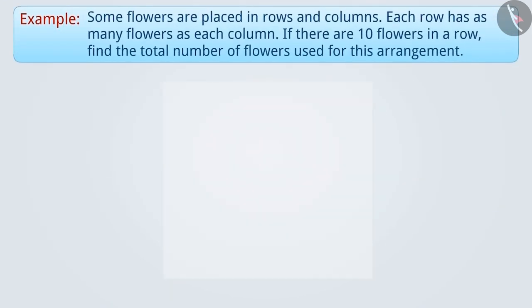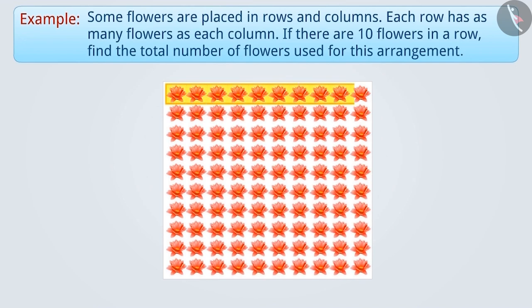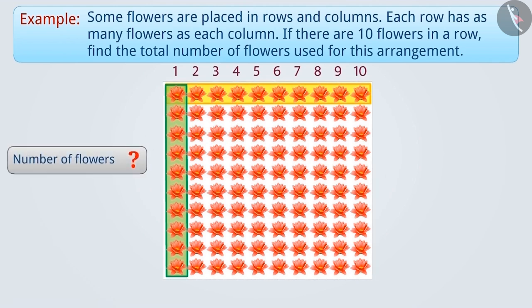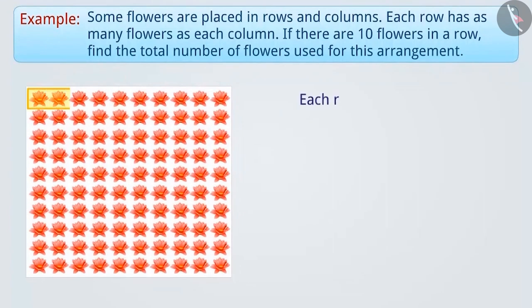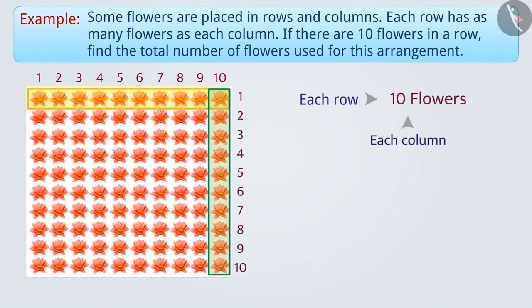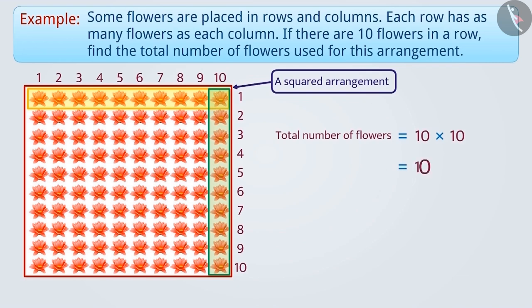Next example: some flowers are placed in rows and columns, where each row has as many flowers as each column. If there are 10 flowers in a row, find the total number of flowers used for this arrangement. Since each row has 10 flowers and each column also has 10 flowers, we can see a squared arrangement. The total number of flowers will be 10 multiplied by 10, equal to 100.